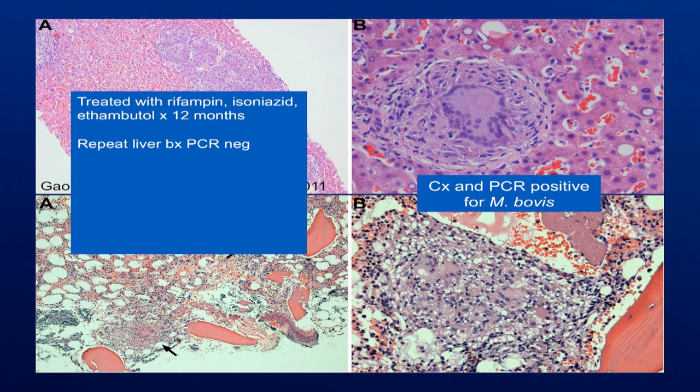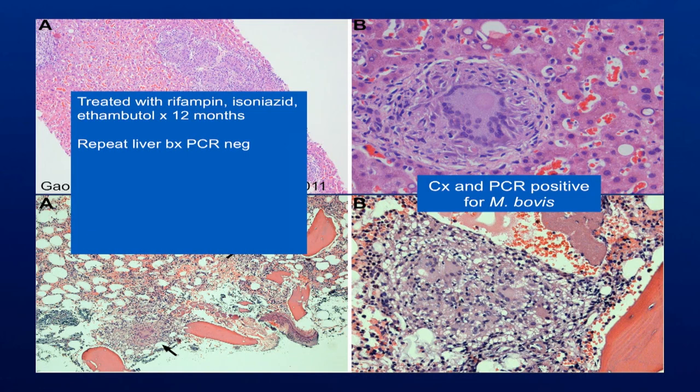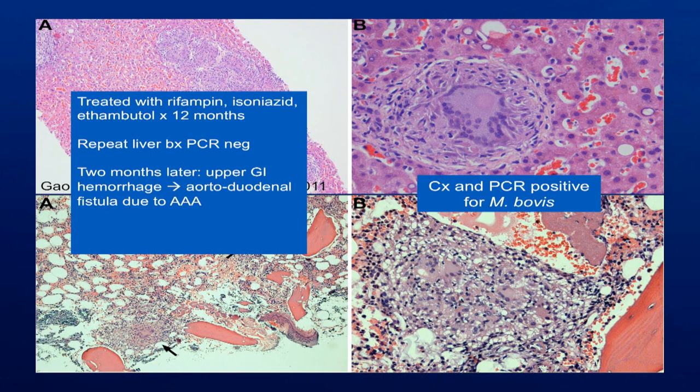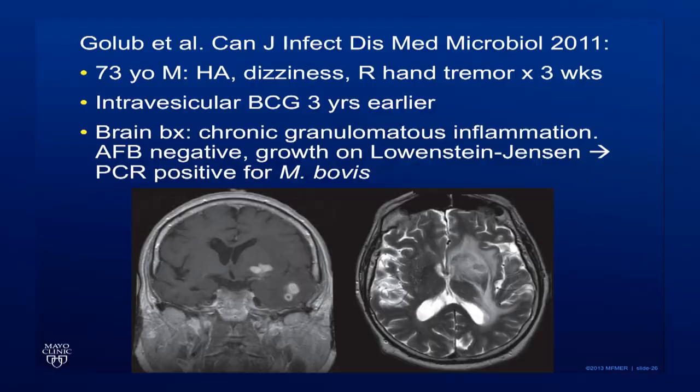This patient was treated with triple drug therapy for a year and had a repeat biopsy of the liver which was PCR negative; however, eventually developed GI hemorrhaging due to an abdominal aortic aneurysm, and then resumed treatment with triple drug therapy. In another case, a patient presented with neurological symptoms three years after having intravesicular BCG. This patient had brain lesions which showed chronic granulomatous inflammation, and PCR was positive for Mycobacterium bovis — neurological findings which were similar to ours.